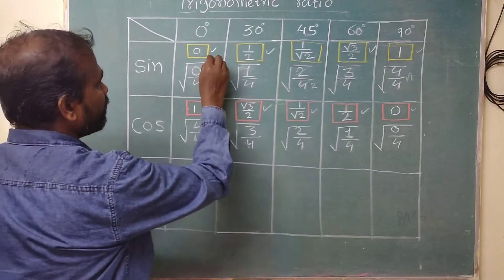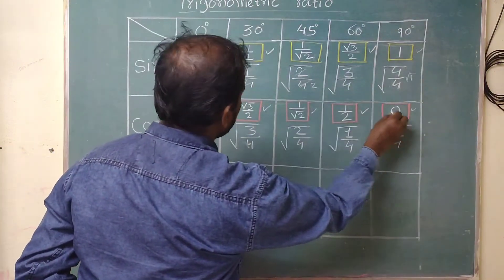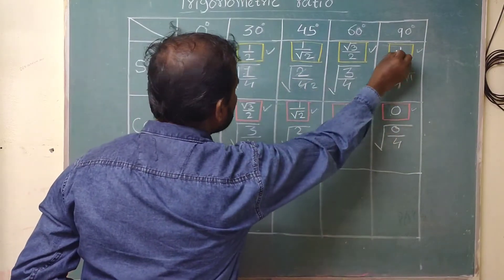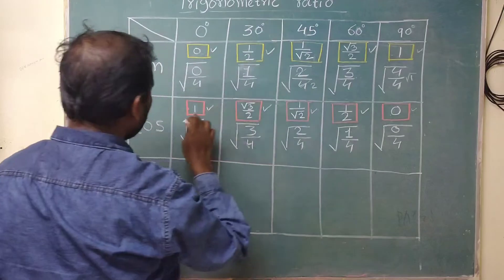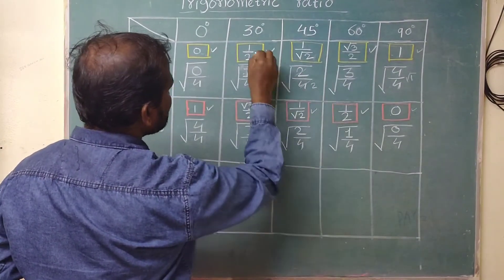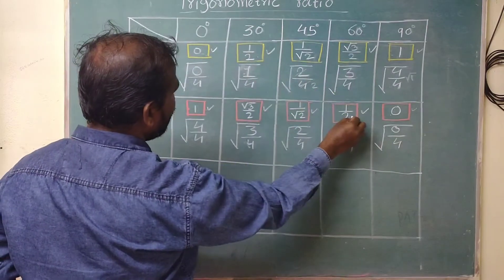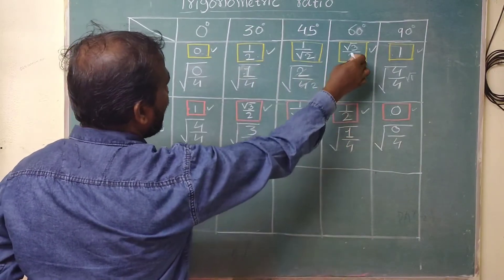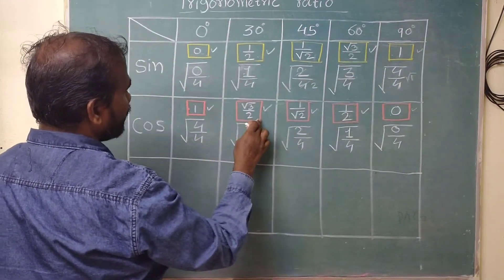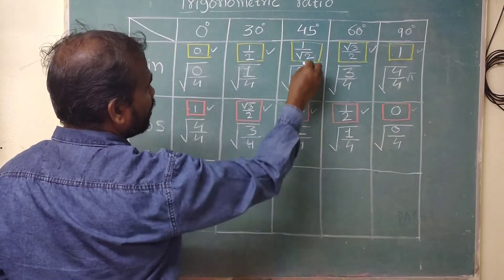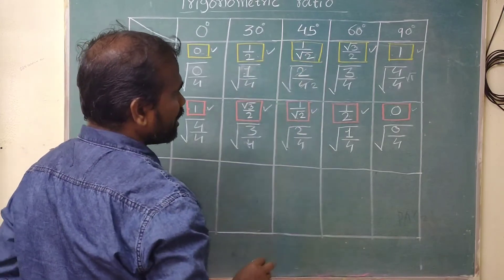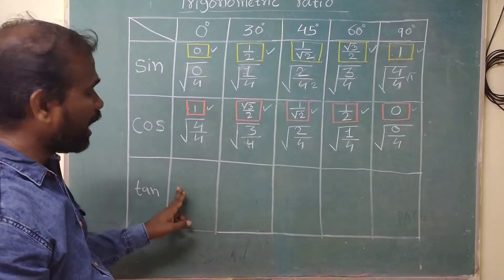Another method: if you look at these values, sin 90° and cos 0° are the same. Sin 30° and cos 60° are the same — both 1/2. Sin 60° = √3/2 matches cos 30°. And at 45°, sin 45° = cos 45° = 1/√2 — it repeats itself. This is another useful pattern to remember.